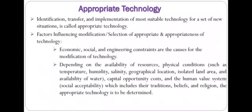The factors influencing the selection or modification of appropriate technology include economic, social, and engineering constraints, depending on the availability of resources. The region, its surroundings, and its environment are also deciding factors for determining whether a technology is appropriate for a given terrain or country.